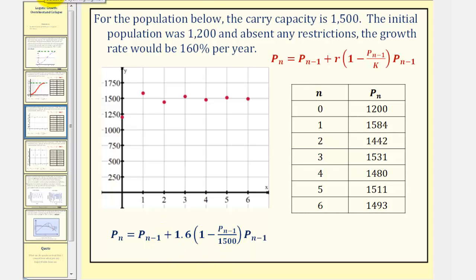Let's begin by looking at the table of values. Notice how P sub one, P sub three, and P sub five all have population levels above the carrying capacity of 1,500. This is overshoot. But notice how the year after the overshoot, the population goes back down below the carrying capacity.